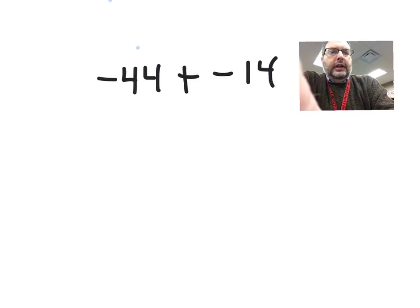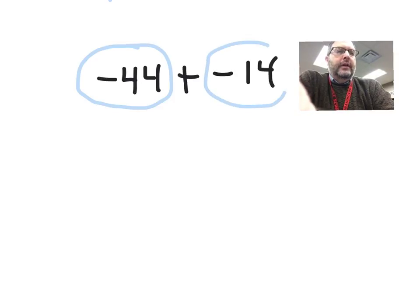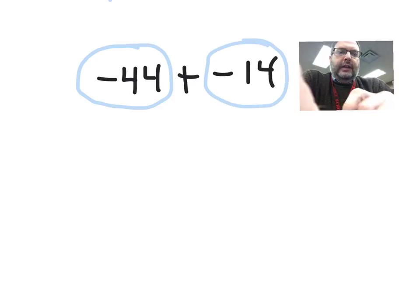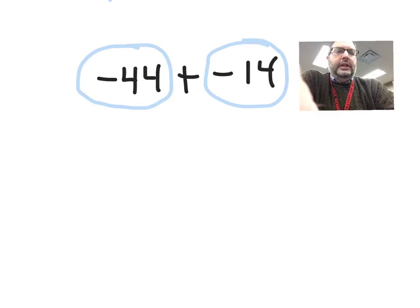Looking at this problem here: negative 44 plus negative 14. I have two negative integers, so my signs are the same. I add them together — 44 and 14 gives you 58 — and then I remember that my sign is negative, so the answer is negative 58.